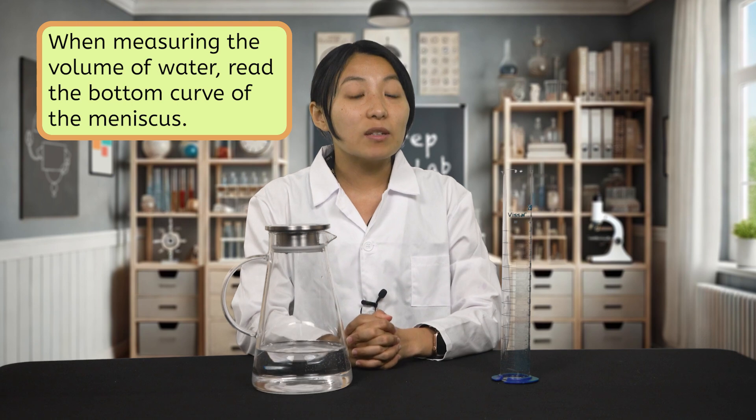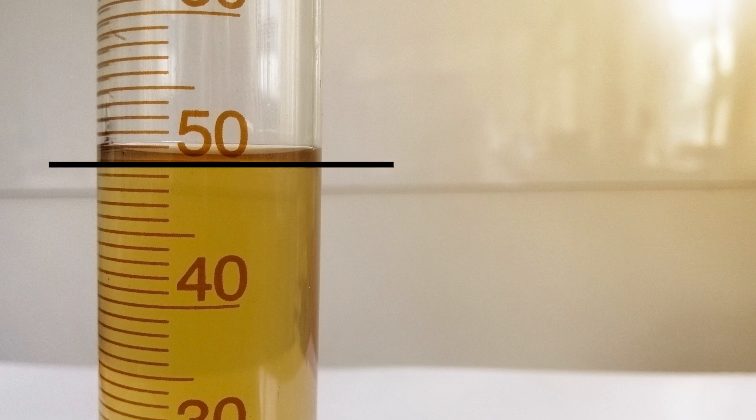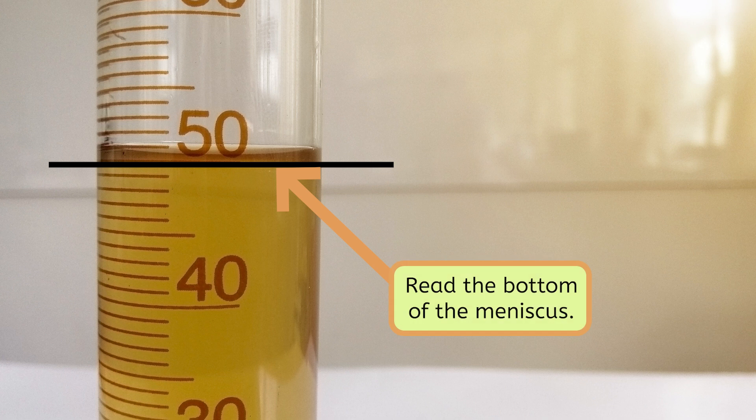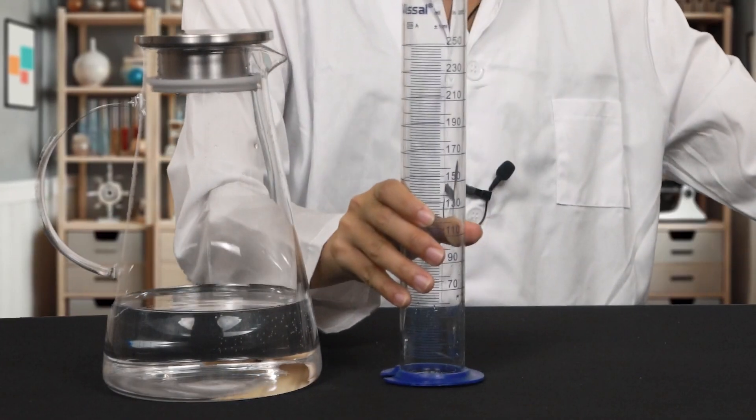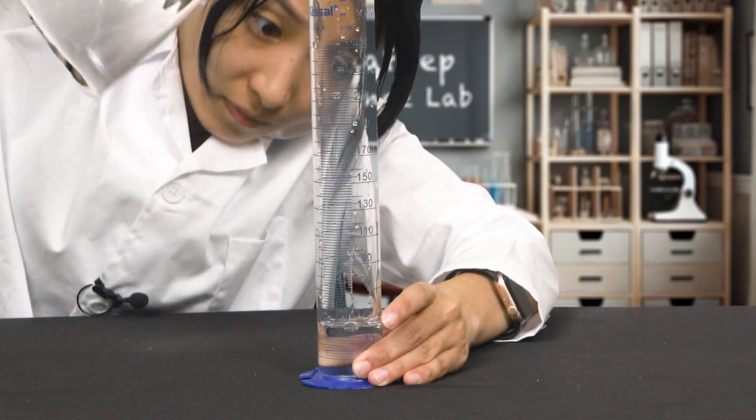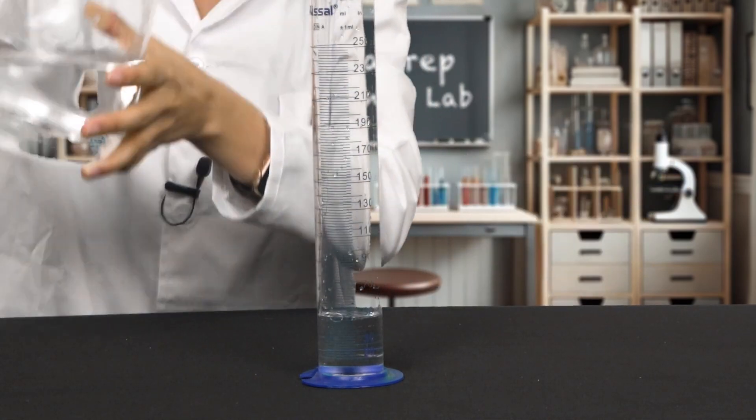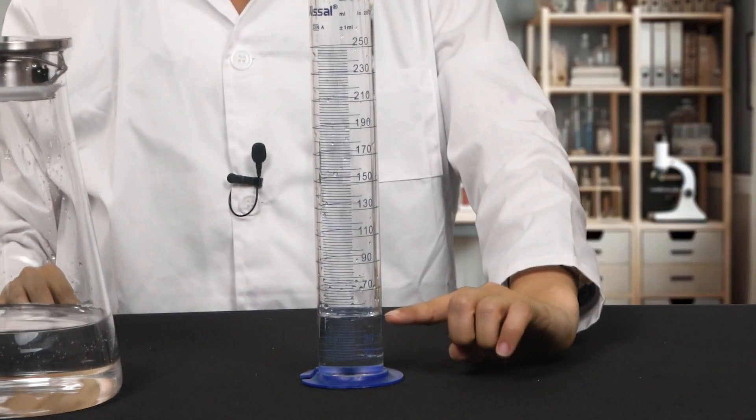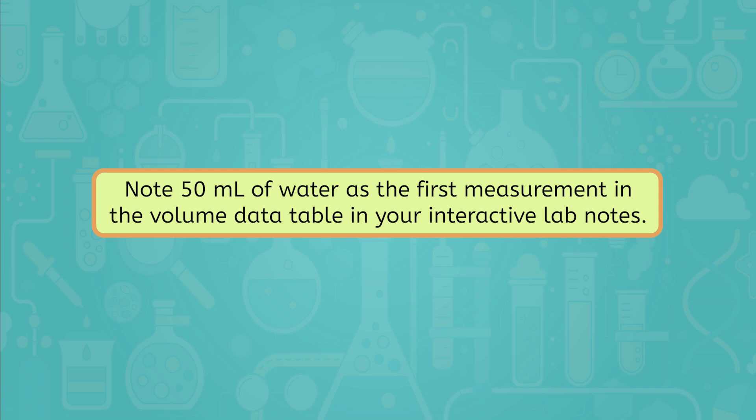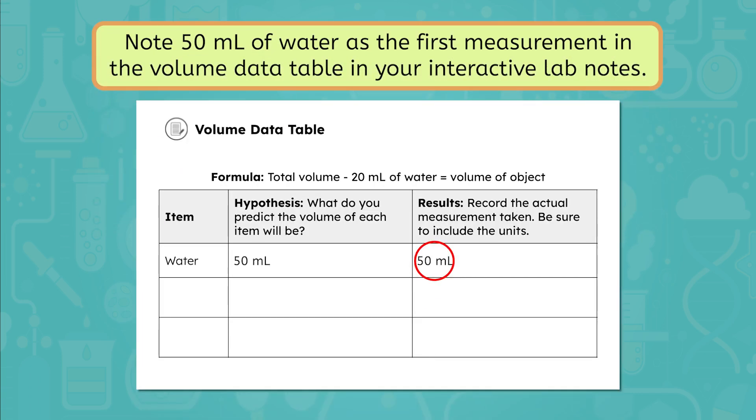To start, we'll practice reading accurate volume measurements by filling our graduated cylinder with 50 milliliters of water. This will be the first measurement to fill out in your data table. When measuring the volume of the water, be sure to read the bottom curve of the meniscus, or water line. For example, we can see that the bottom of the meniscus is at 50 milliliters. When you're measuring your water, be sure to read the bottom of the meniscus at eye level. Place your graduated cylinder on a solid flat surface. This helps keep the water level even. Then slowly fill it with water until the water reaches the 50 milliliter line. When reading the water level, leave your graduated cylinder on the table and get down to eye level with the cup. Looking from above or the side can make the water appear higher or lower than it really is. Once you've filled your graduated cylinder with 50 milliliters of water, note this as your first measurement in the volume data table in your interactive lab notes.